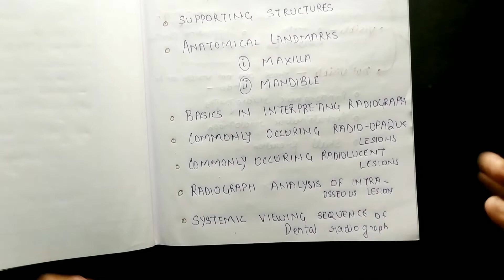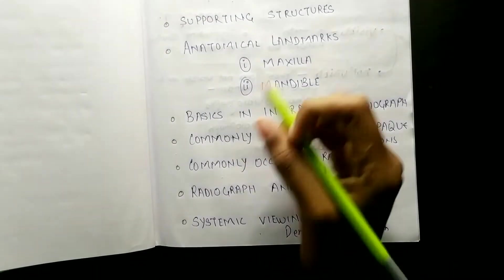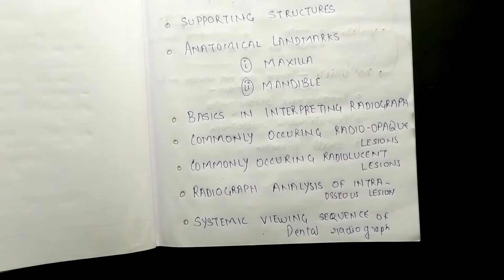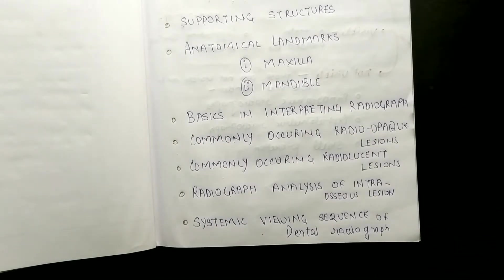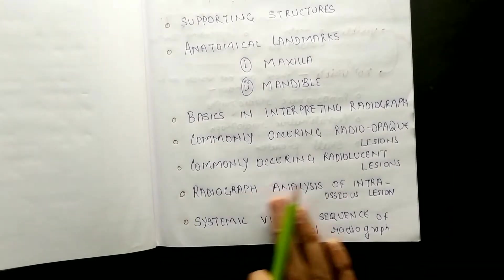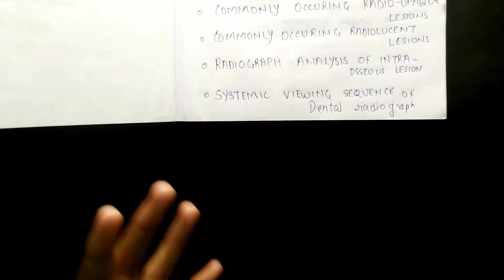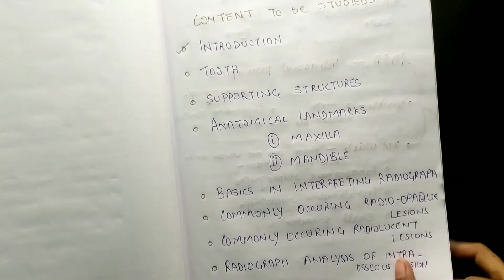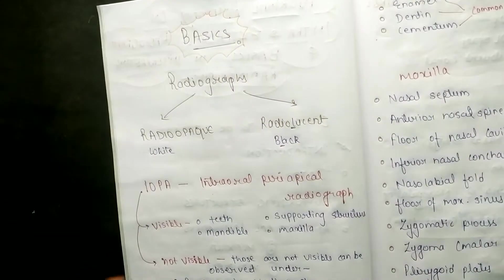In this series, the content we will cover: first, this introduction video, then what structures we see in the crown of the tooth, then supporting structures, anatomical landmarks in maxilla and mandible, basic interpretation of radiographs, commonly occurring radiopaque and radiolucent lesions, radiograph analysis of intraosseous lesions, and systemic viewing sequence of dental radiographs. These are all very important topics, so make sure you complete this series with me.